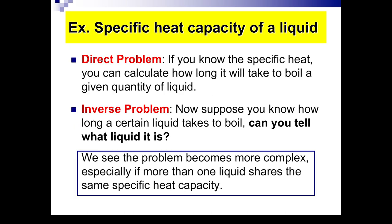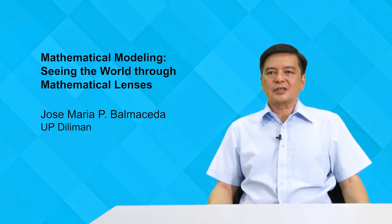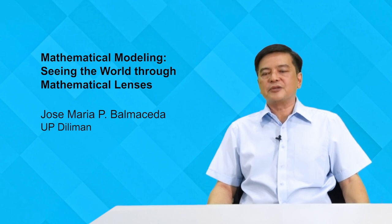I'll give an example. Suppose you want to study the specific heat capacity of a liquid. There are two types of problems you can set up. One is the direct problem. If you know the specific heat, you can actually calculate how long it will take to boil a given quantity of liquid. So this is usually easy. Different liquids require different specific heats, have different specific heats. But once you know that, you know how long a certain volume will boil.